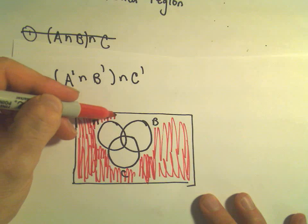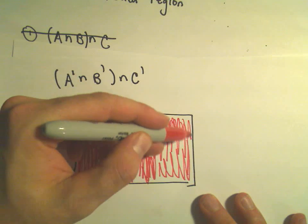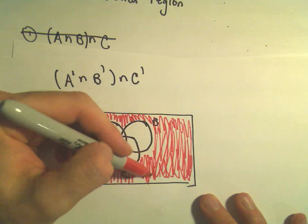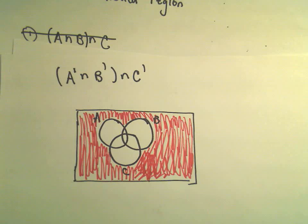And again, if you kind of say it in English, it's got to be not in A and not in B and not in C. And that's all I'm doing. What region would that be? It would be everything outside of the three circles.